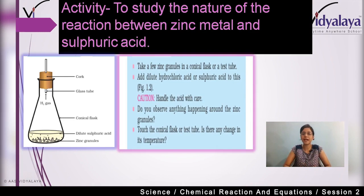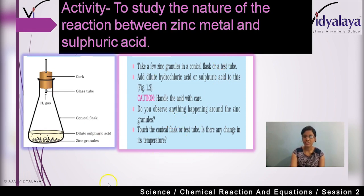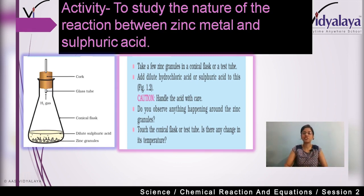The second activity is about studying the nature of the reaction between zinc metal and sulfuric acid. We take a few zinc granules in a conical flask or test tube, and add dilute hydrochloric acid or sulfuric acid. When zinc granules react with the acid, heat is produced. The conical flask will feel warm — its temperature rises and heat is formed. This is an example showing that when reactions occur, there is a change in temperature or heat formation.